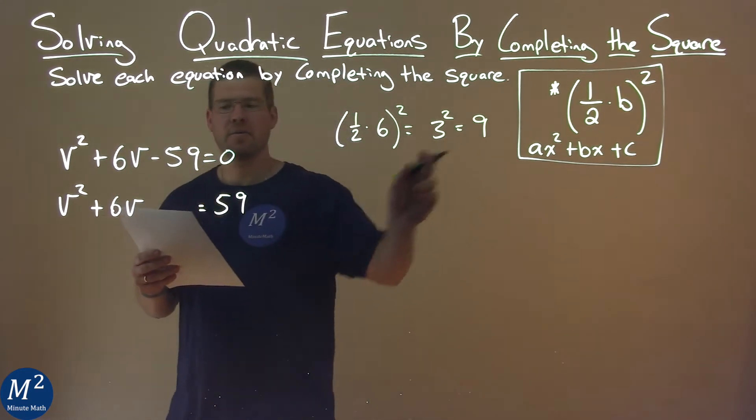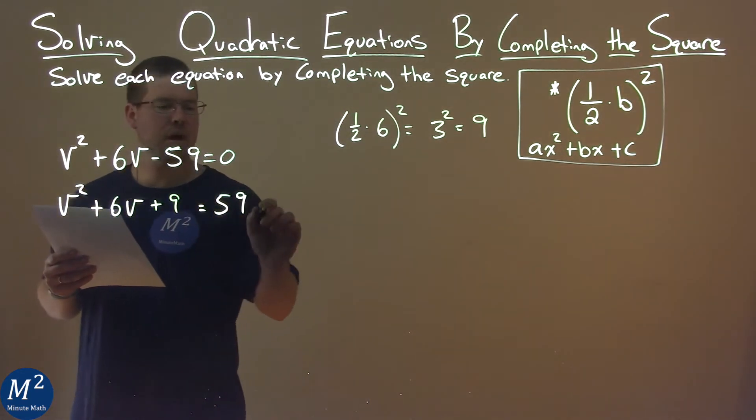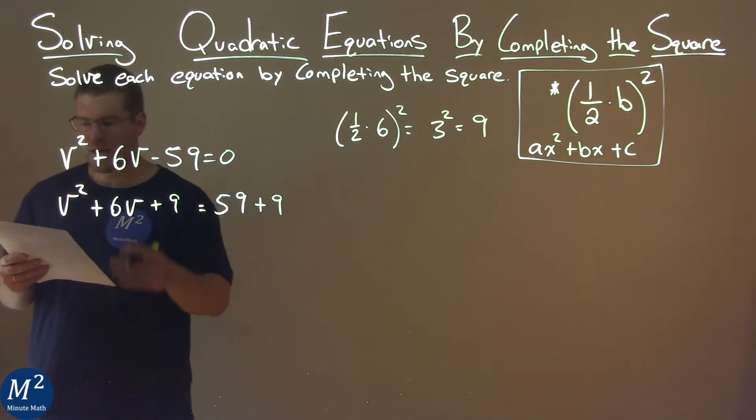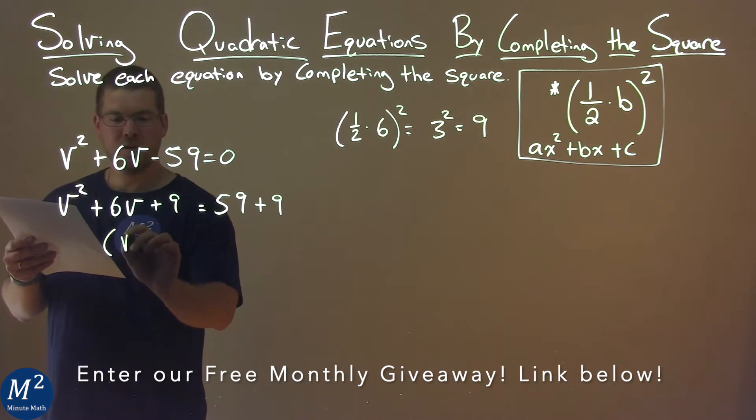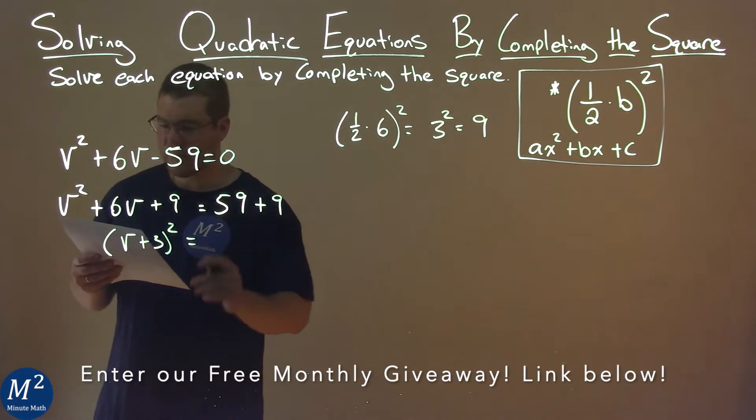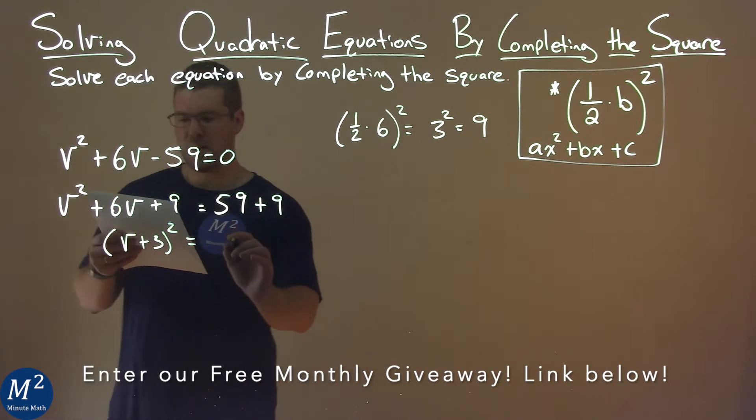We're going to take that 9 and add it to both sides of the equation. The left-hand side becomes a perfect square now: v + 3, all squared. The right-hand side, 59 + 9 is 68.